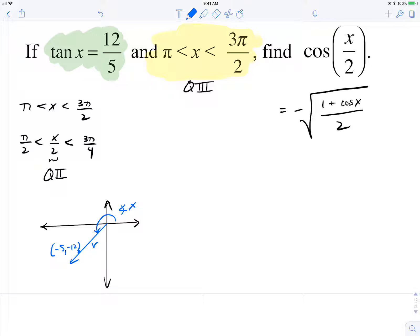But we need r because we need to find what cosine of x is equal to. So negative 5 squared plus negative 12 squared is equal to r squared. So I believe r is equal to 13. Double check. Yep, 13.